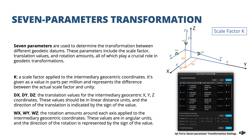Seven parameters are used to determine the transformation between different geodetic datums. These important parameters include the scale factor k, transformation values dx, dy, dz, and rotation amounts wx, wy, and wz.